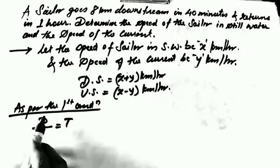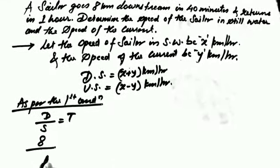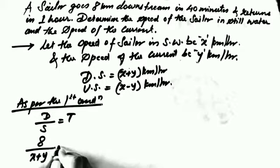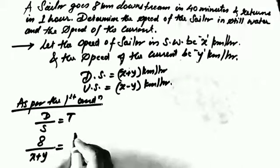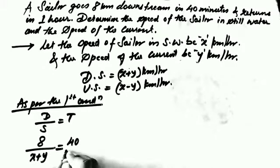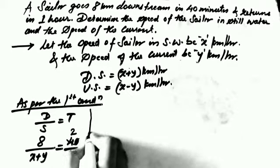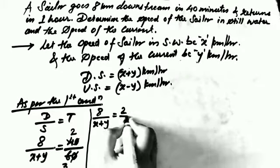For the first condition — the sailor goes 8 km downstream in 40 minutes — we apply the formula: distance divided by speed equals time. Distance is 8 km, speed is x plus y km per hour. Time is 40 minutes, but since speed is in km per hour, we convert 40 minutes to hours by dividing by 60, giving 2/3 hours. So: 8 divided by (x plus y) equals 2 by 3.